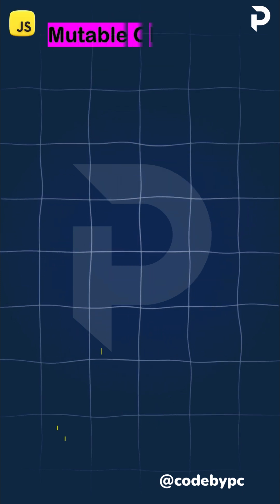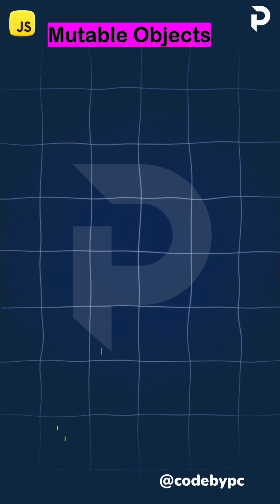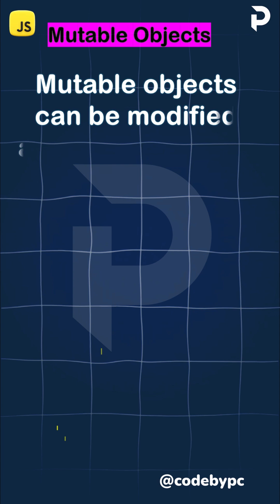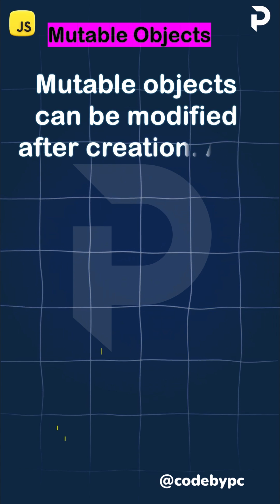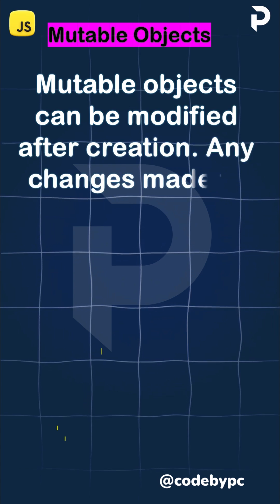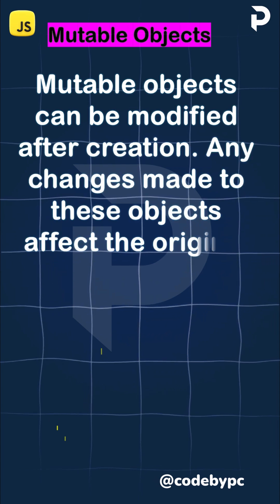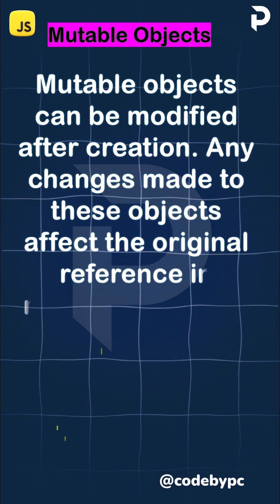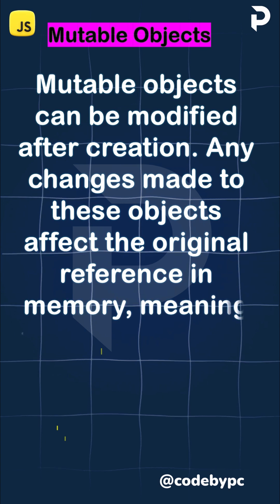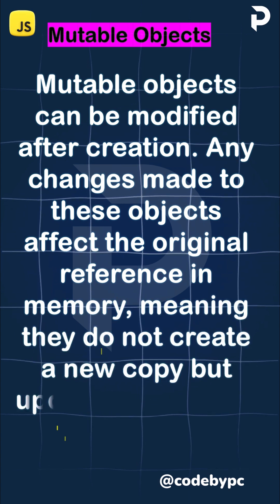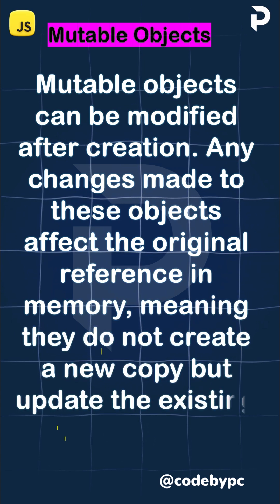Mutable objects can be modified after creation. Any changes made to these objects affect the original reference in memory, meaning they do not create a new copy but update the existing data.